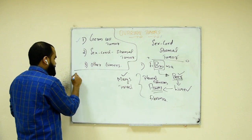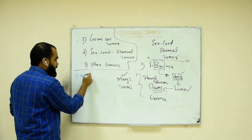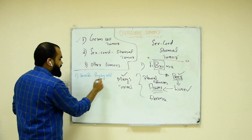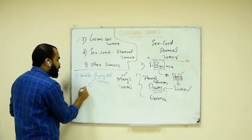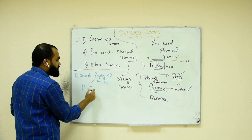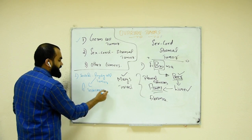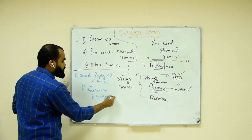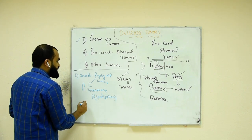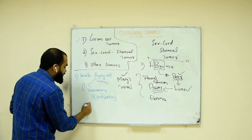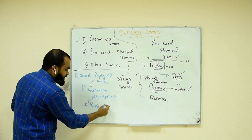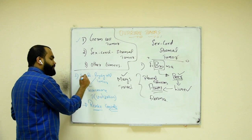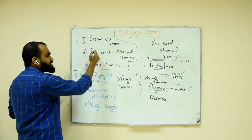The second sex cord stromal tumor is Sertoli-Leydig cell tumor. Leydig cells normally produce testosterone in males, so this patient will have excess testosterone, resulting in increased virilization. On histology, you will see Reinke crystals — if you hear 'Reinke crystals,' think only of Sertoli-Leydig cell tumor.